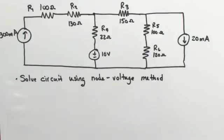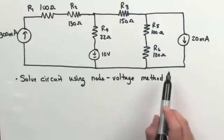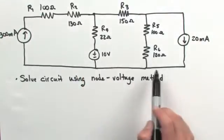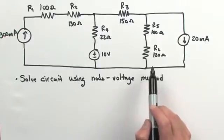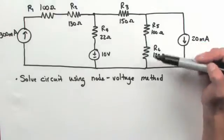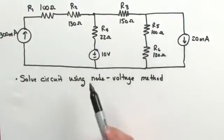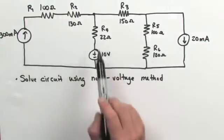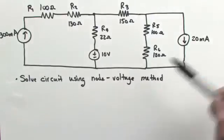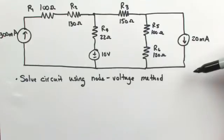Here we have an example that was included in your node voltage method worksheets. In this complicated circuit, we cannot isolate elements to form equivalent series resistance elements other than R1, R2, R5, and R6. But that doesn't really help us determine all of the potentials and currents flowing through the circuit. So what we're going to do is use the node voltage method to solve this circuit completely.